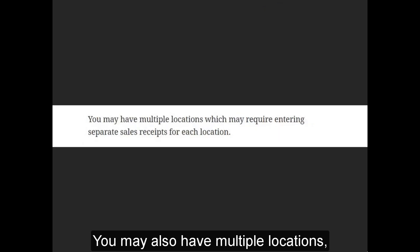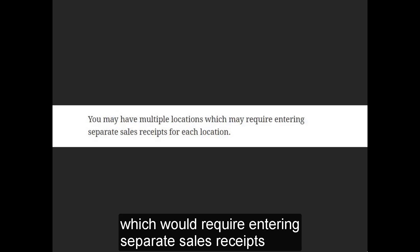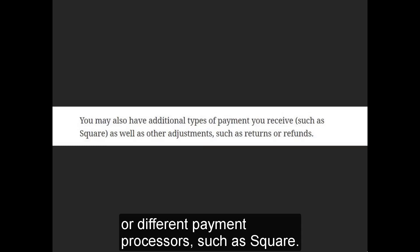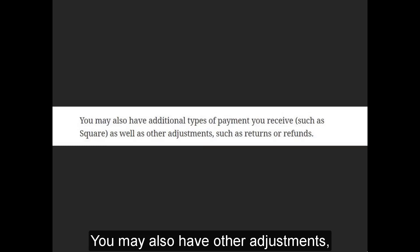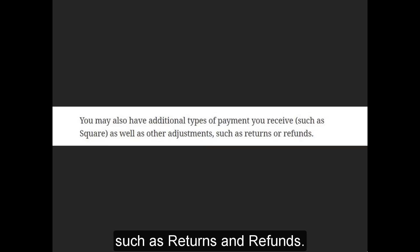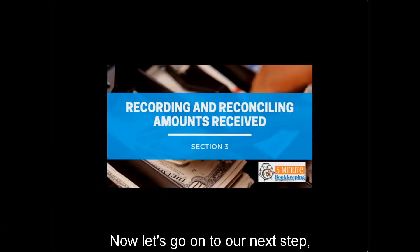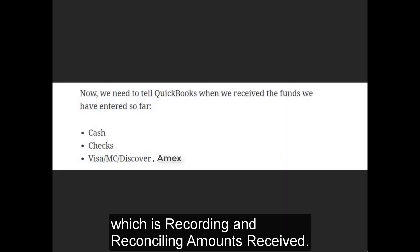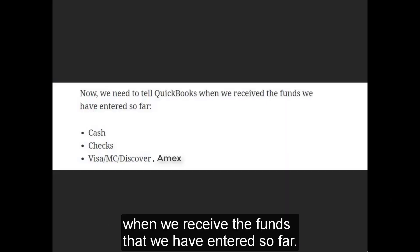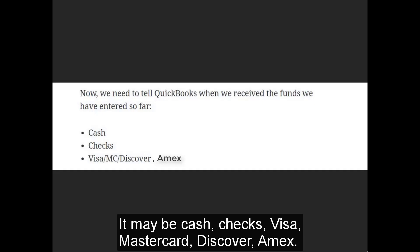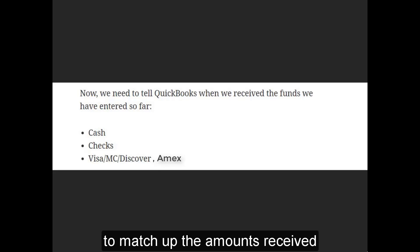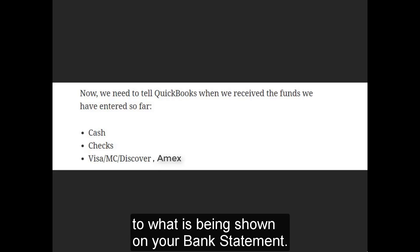You may also have multiple locations, which would require entering separate sales receipts for each location. You may also have additional types of payments or different payment processors such as Square, as well as other adjustments like returns and refunds. Now let's go on to our next step, which is recording and reconciling amounts received. We need to tell QuickBooks when we receive the funds we have entered — that may be cash, checks, Visa, MasterCard, Discover, or Amex — so that we can match up the amounts received to what is being shown on your bank statement.